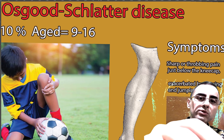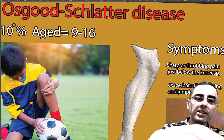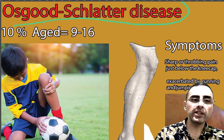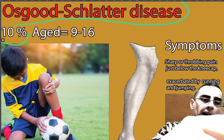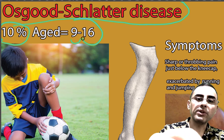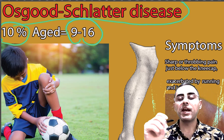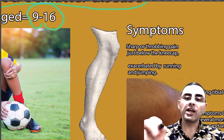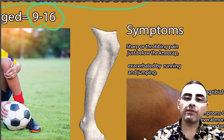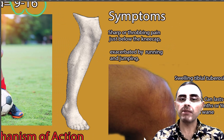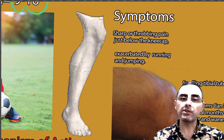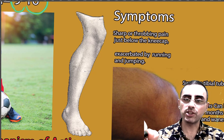We will talk about Osgood-Schlatter disease. It's so important because it affects around 10% of young athletes aged 9 to 16. It is an extremely common condition that causes knee pain which can last for several months, sometimes for several years, and it can importantly decrease the quality of life of such children.